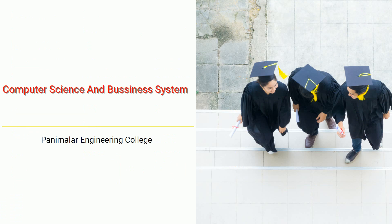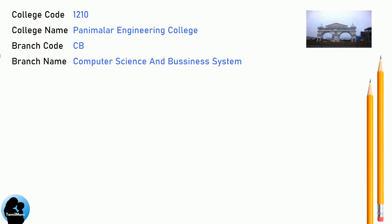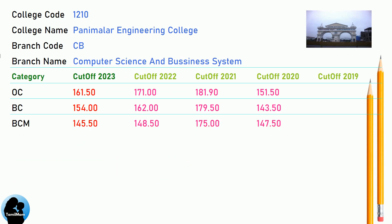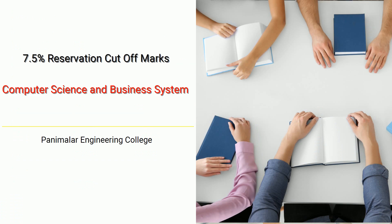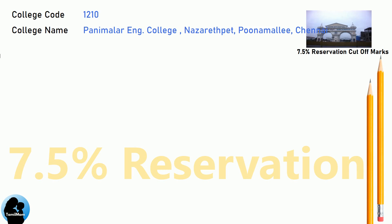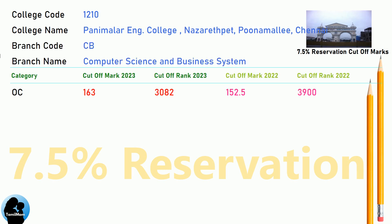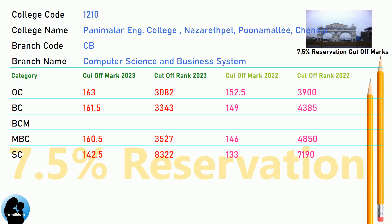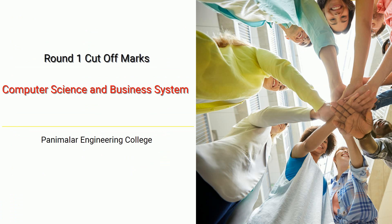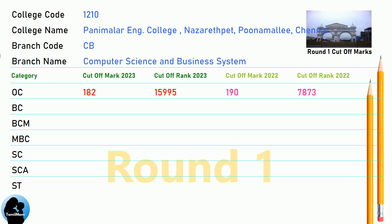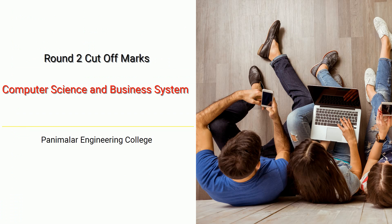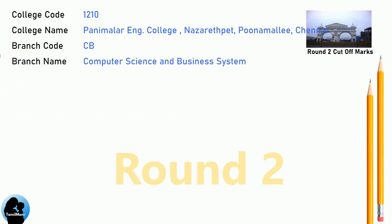DNA Cut-off for Panimalar Engineering College in Computer Science and Business Systems. DNA 7.5 Reservation Cut-off for Panimalar Engineering College in Computer Science and Business Systems. DNA Round 1 Cut-off for Panimalar Engineering College in Computer Science and Business Systems. DNA Round 2 Cut-off for Panimalar Engineering College in Computer Science and Business Systems.